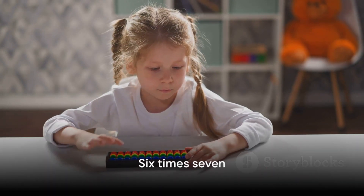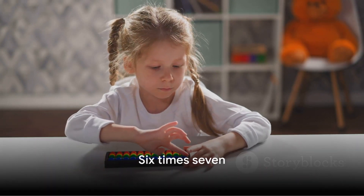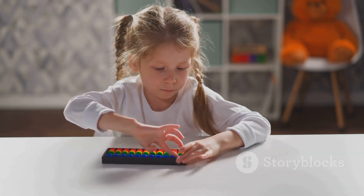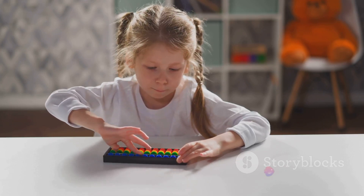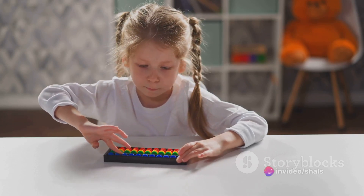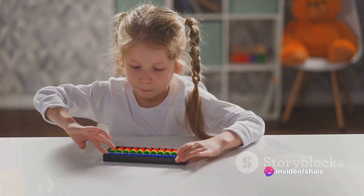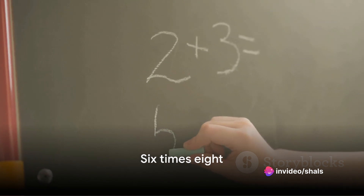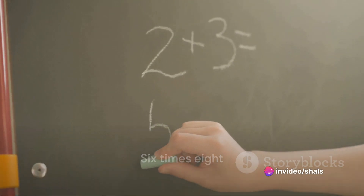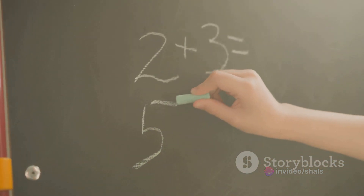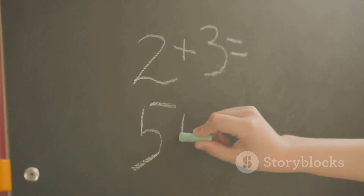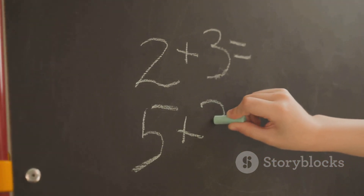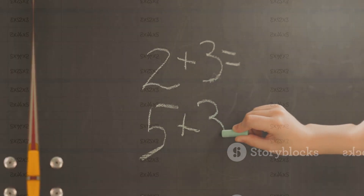Moving on, six times seven equals forty-two. It's as if you had seven groups of six. When you count all the items, you'll find that they add up to forty-two. Now let's think about six times eight — this equals forty-eight. It's similar to having eight groups of six. If you count all of the items, you'll find that they total forty-eight.